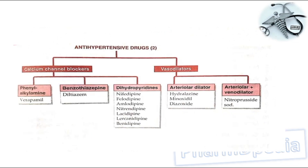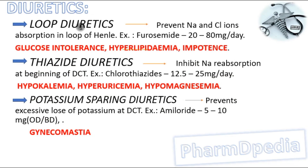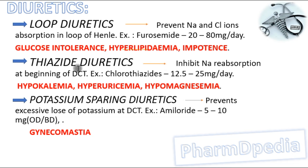Now let us discuss each class particularly. Loop diuretics are high-efficacy diuretics; they prevent sodium and chloride ion absorption in the loop of Henle. Example: furosemide, 20–80 mg per day. Adverse reactions include glucose intolerance, hyperlipidemia, and impotence.